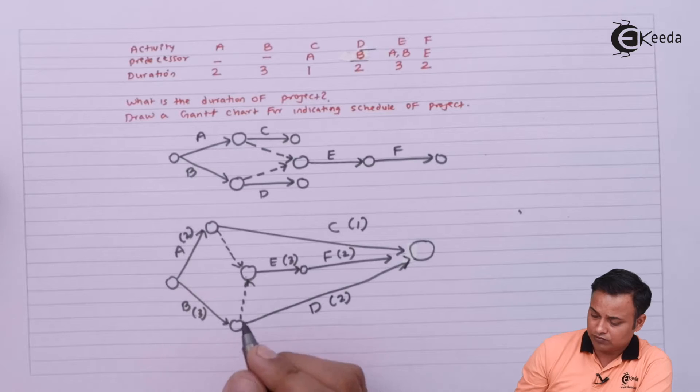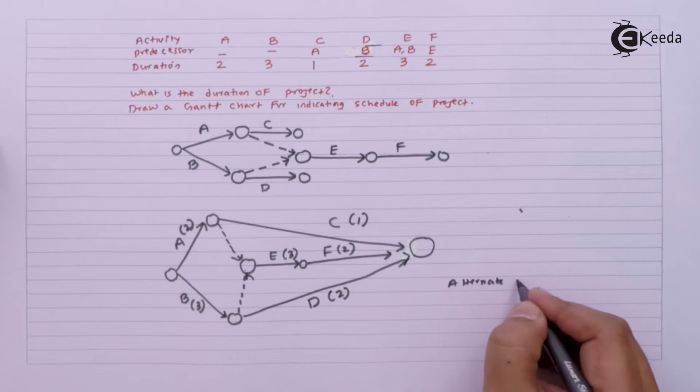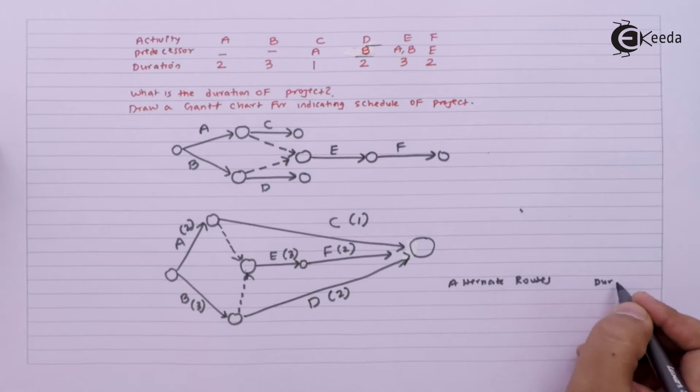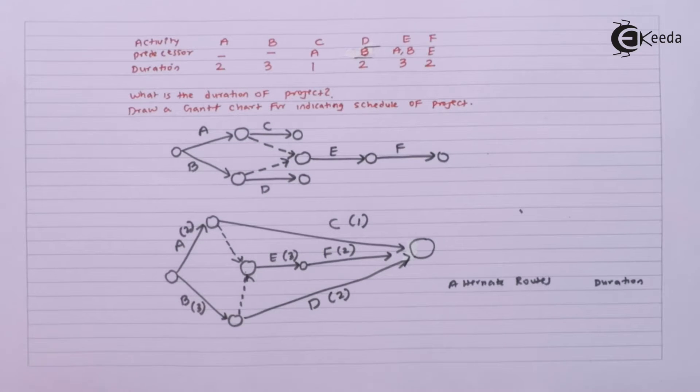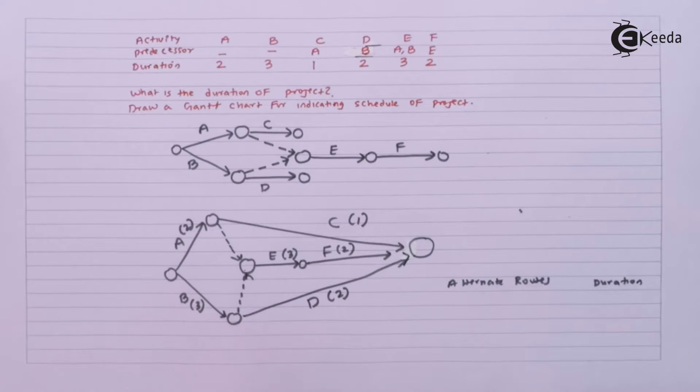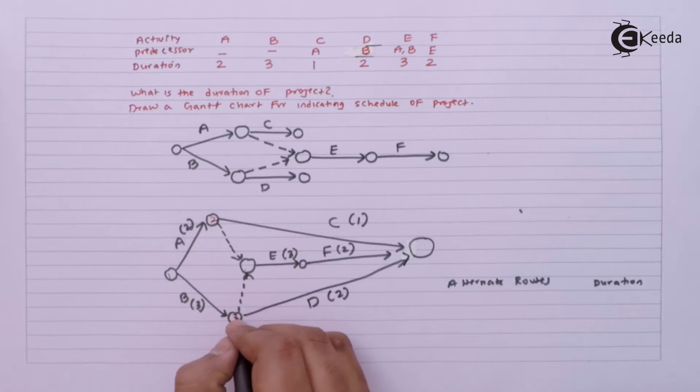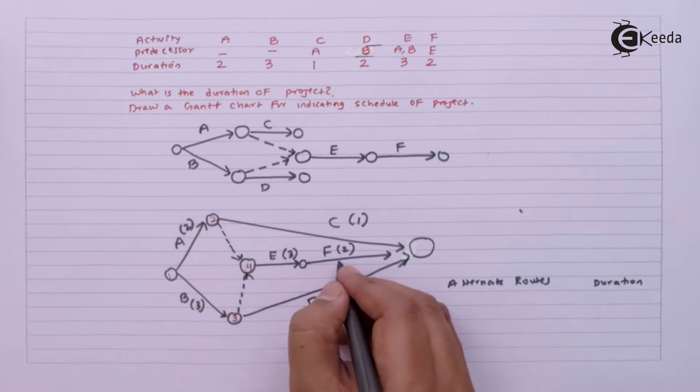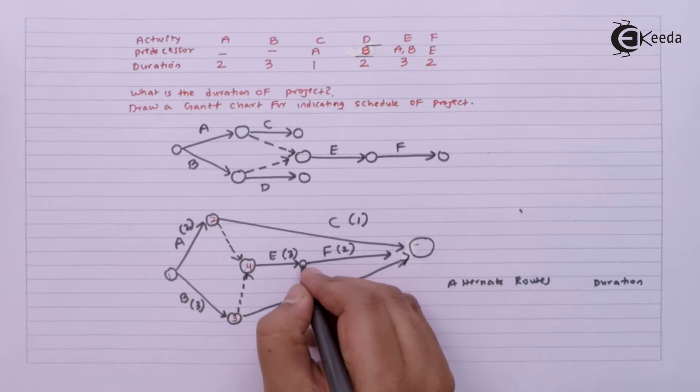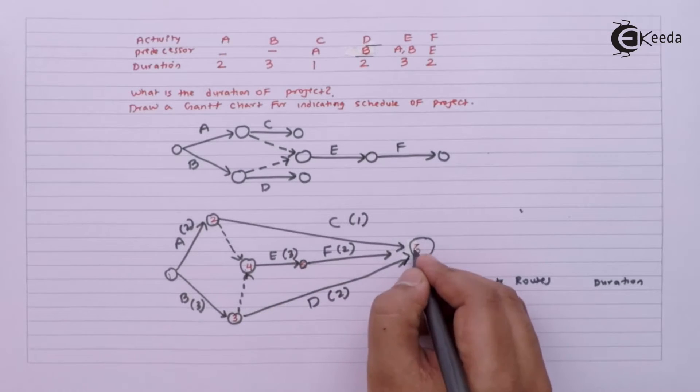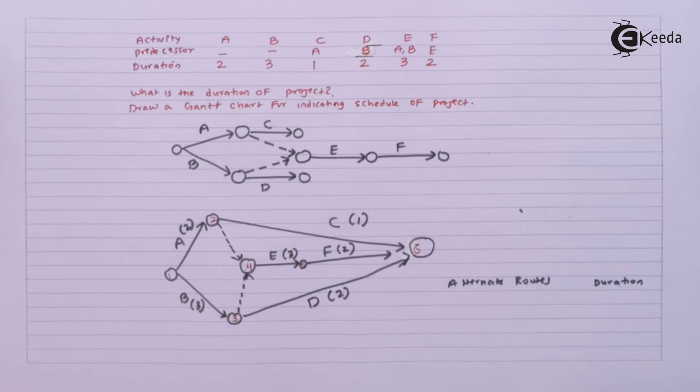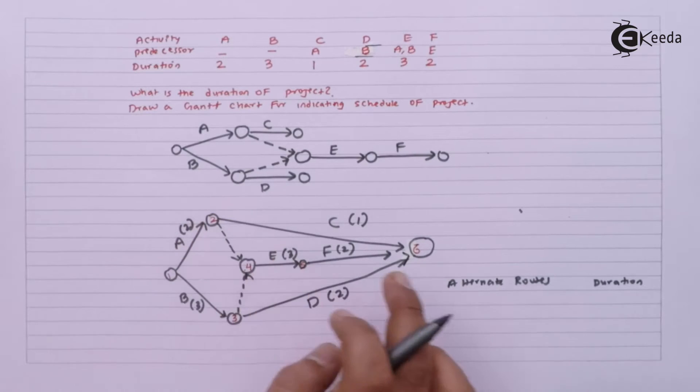Let's see my alternate routes. I'll just put the numbers here first: one, two, three, four, five, and six.